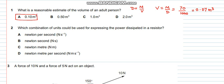Question number 2 says which combination of units could be used for expressing the power dissipated in a resistor. Power is basically energy supplied per unit time and energy is work done, force into distance divided by time. Force is measured in newtons, distance in meters and time in seconds. So this becomes newton meters per second. Seeing the options, D newton meters per second becomes the appropriate option.